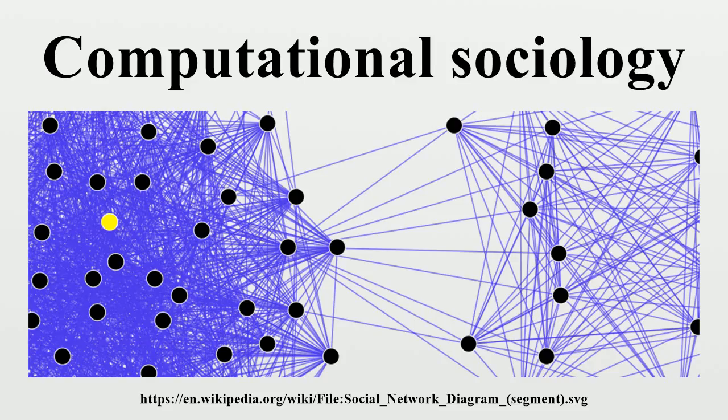The resulting networks, which can contain thousands of nodes, are then analyzed using tools from network theory to identify the key actors, the key communities or parties, and general properties such as robustness or structural stability of the overall network, or centrality of certain nodes. This automates the approach introduced by quantitative narrative analysis, whereby subject-verb-object triplets are identified with pairs of actors linked by an action, or pairs formed by actor-object.